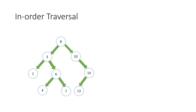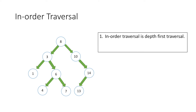In this video we will learn in-order and post-order traversal. Let's start with in-order traversal. Suppose this is the binary search tree given to us. In-order traversal is a depth first traversal where we follow the rule left-node-right. From the current node we move left until we reach a node which does not have a left child, then we print the value of that node and move in the right direction.